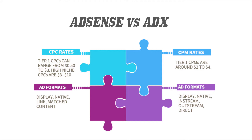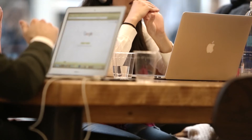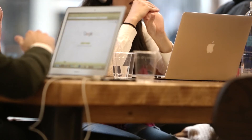Google AdSense is primarily a CPC-based ad network, while AdX is primarily a CPM-based ad network. With AdSense, you are paid when a user clicks on your ad, whereas with Google AdX, you are paid for each impression served on your website.